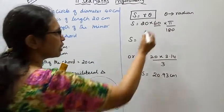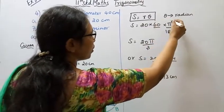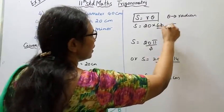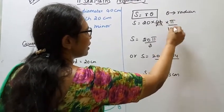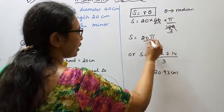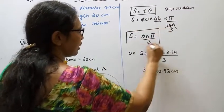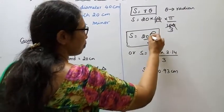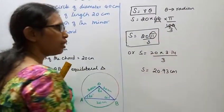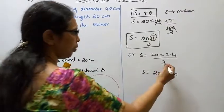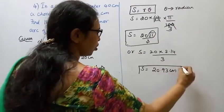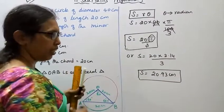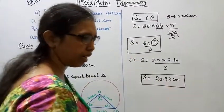60 into radian, multiply pi by 180, cancel, 60 by 3 is 20. S equals 20 pi by 3. It is one answer. Or S equals 20 into pi value 3.14 divided by 3. S equals 20.93 cm.